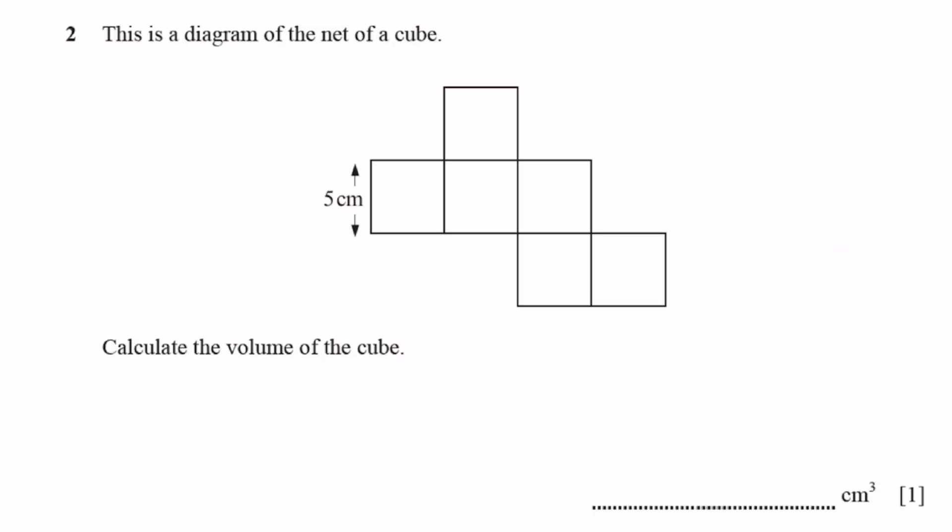Question 2. This is a diagram of the net of a cube. Calculate the volume of the cube. The volume of a cube will be the side length of the cube cubed. So the side length is 5, and then we just do 5 cubed. That's equal to the volume, which is 125 centimeters cubed.